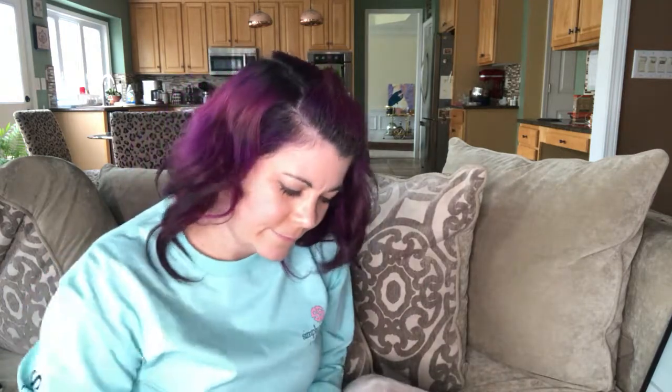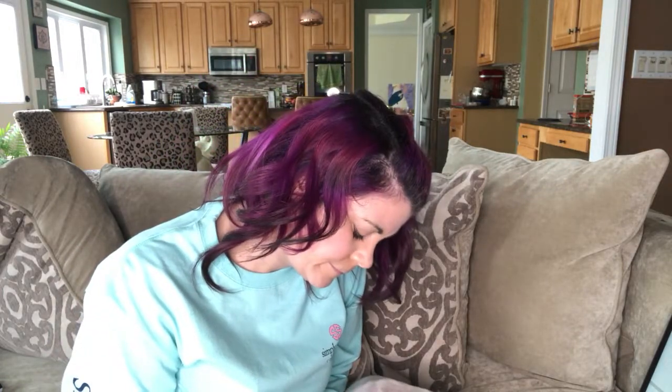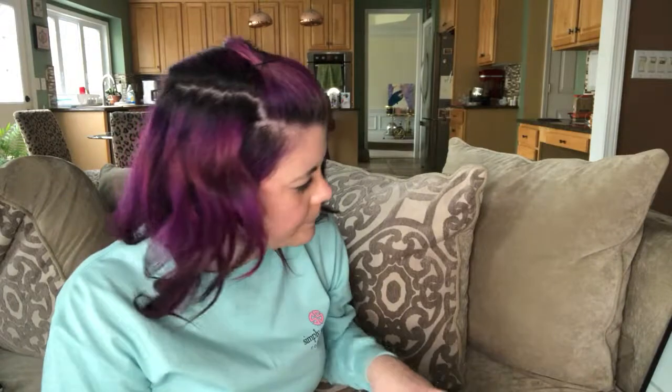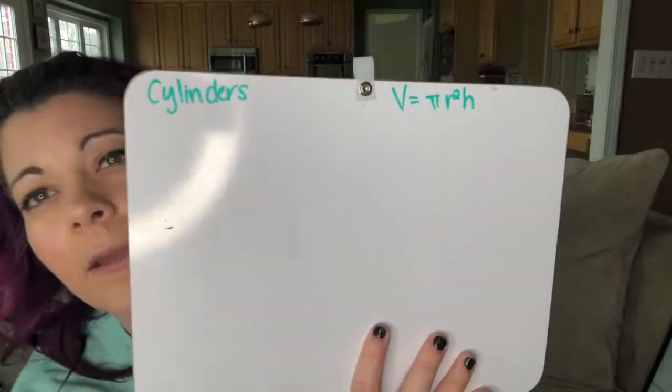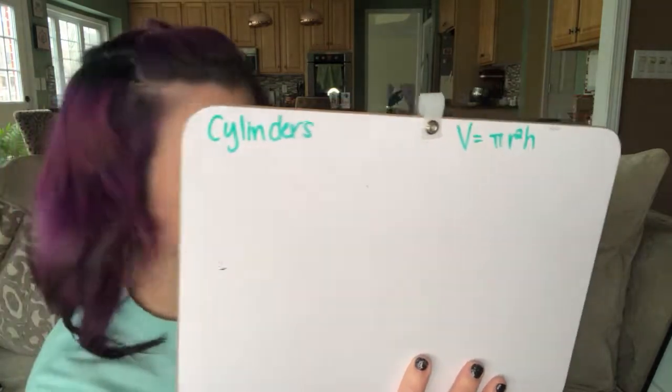So cylinders—volume of cylinders. Volume equals pi r squared H. There is the volume of cylinders: pi r squared H.